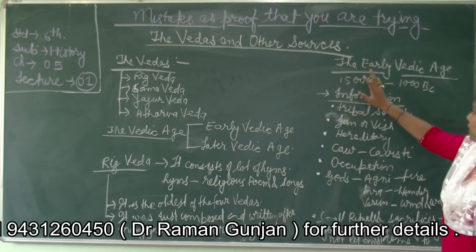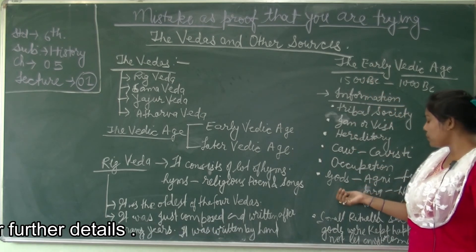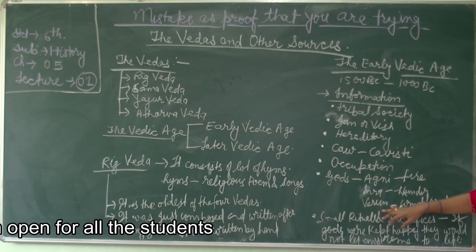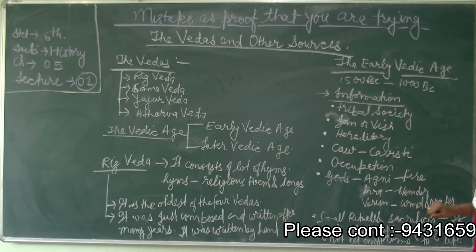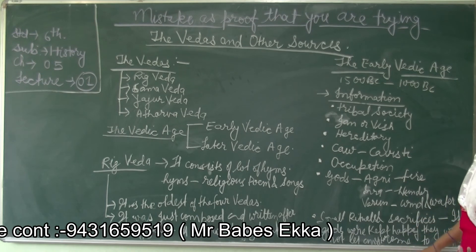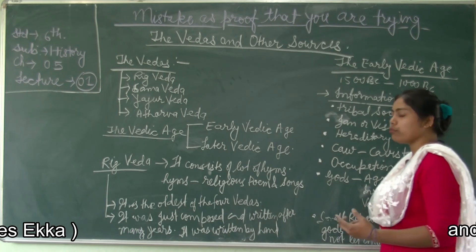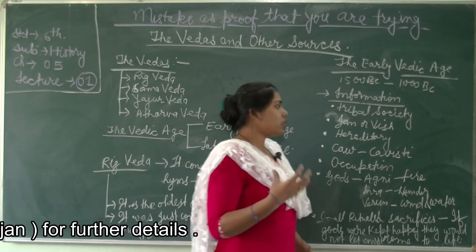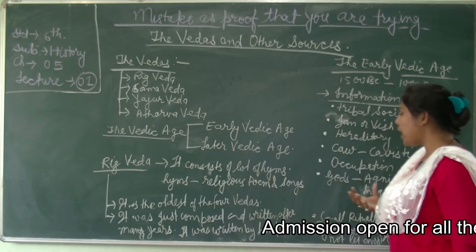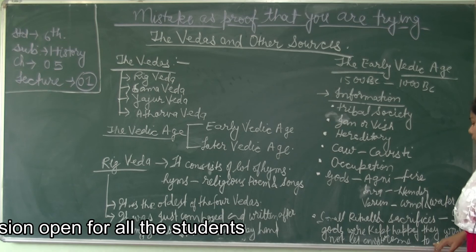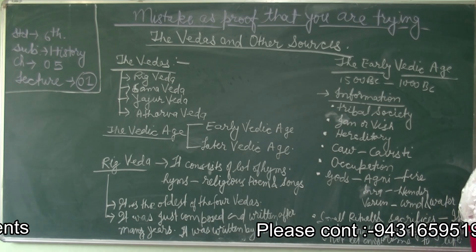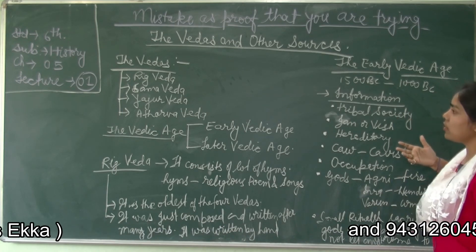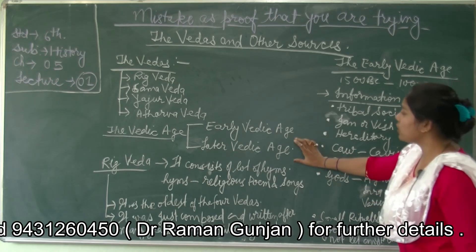In the Early Vedic Age, people worshipped gods such as Agni (the god of fire), Indra (the god of thunder), and Varuna (the god of wind and water). The Raja also performed small rituals and sacrifices, believing these would secure their society. People believed that if the gods were kept happy, no harm would come to them. We will finish this lecture here and in the next lecture we will see about the Later Vedic Age. Thank you.